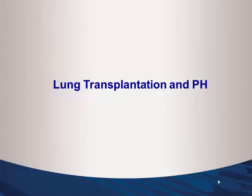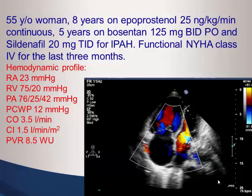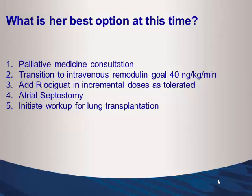Switching to transplantation and IPAH: a 55-year-old woman on epoprostenol therapy at 25 nanograms/kg/minute for 8 years, plus bosentan and sildenafil for IPAH for 5 years. She has been functional class 4 for the last 3 months with high PA pressure, terrible right atrial pressure, normal wedge, suboptimal cardiac index and output with a high PVR. Options include palliative medicine consultation, transitioning to IV treprostinil at 40 nanograms/kg/minute, atrial septostomy, or initiating workup for lung transplantation.